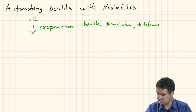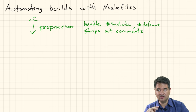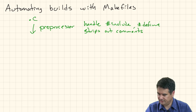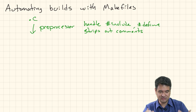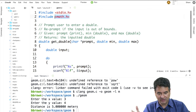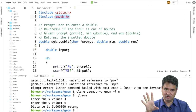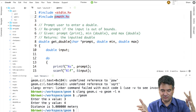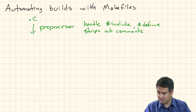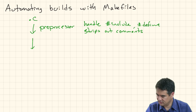The preprocessor also strips out comments. So the preprocessor does two things: it handles all the directives that start with a hash tag, and it strips out any comments. What you get out of the preprocessor is a processed C file that has literally taken the contents of the included files — went out on disk, found those files, and copied and pasted them right into your program. So your program gets huge at this point because stdio.h and math.h are fairly big and get copied and pasted right into that spot.